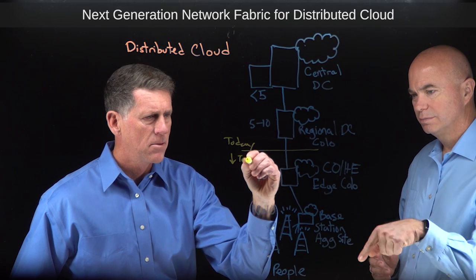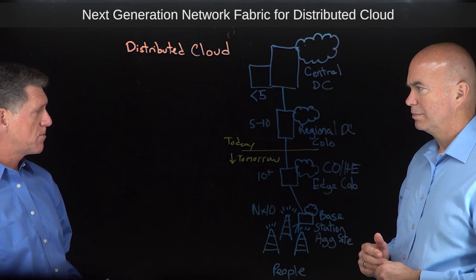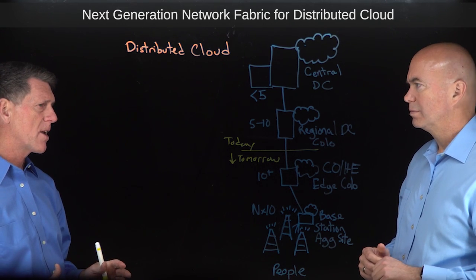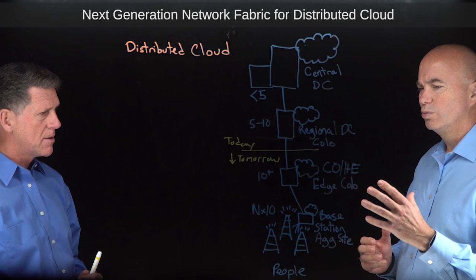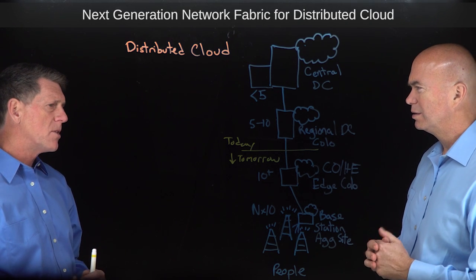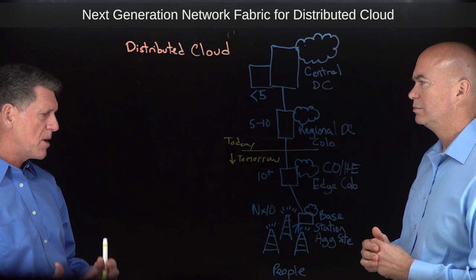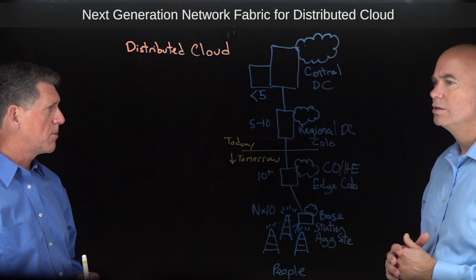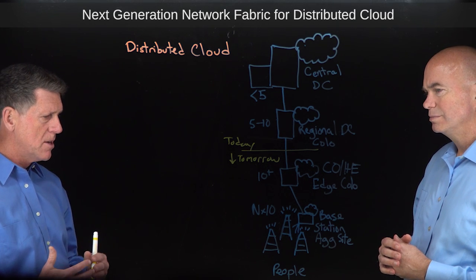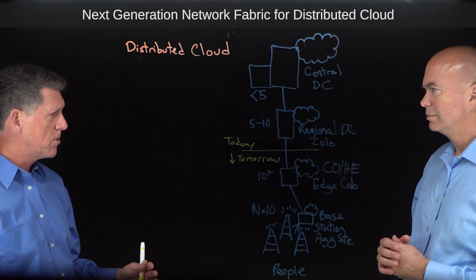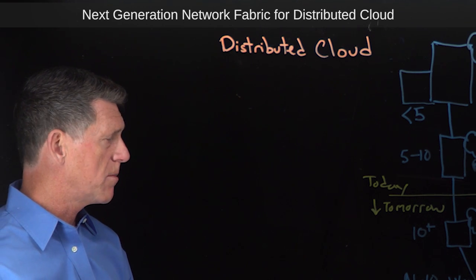Where it's going tomorrow: we're going to start seeing a move out to specialized co-location facilities — edge co-location facilities — as well as central offices for telcos and head ends for cable operators. They're going to be purchasing real estate in unusual places that are closer to people and things that require those requirements we talked about. Eventually, this compute infrastructure could move out to base station aggregation sites, and that's that intersection of 5G and edge compute.